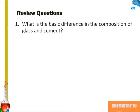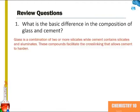Review Question 1: What is the basic difference in the composition of glass and cement? Glass is a combination of two or more silicates, while cement contains silicates and aluminates. These compounds facilitate the cross-linking that allows cement to harden.